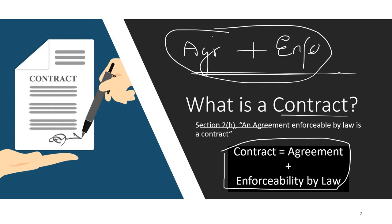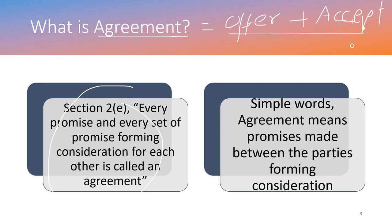We need to understand two things: what is an agreement, and what is enforceability by law. I have expressed this as an equation: Contract = Agreement + Enforceability by Law. Let's first understand what we mean by agreement.